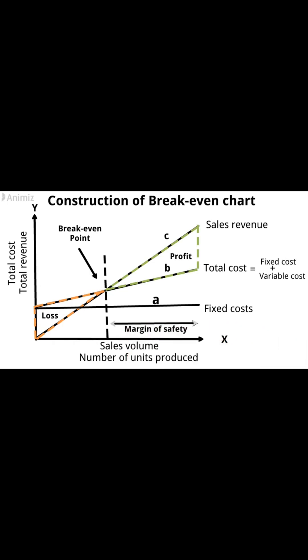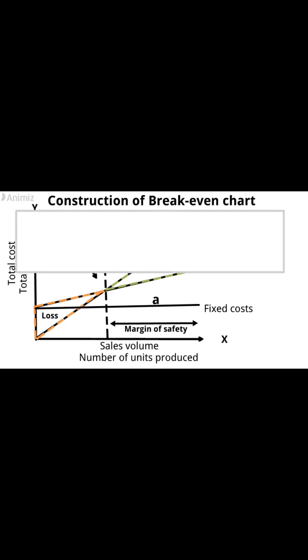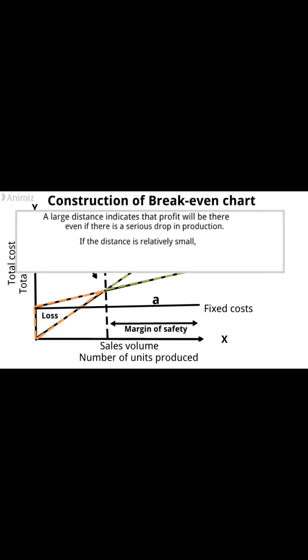The margin of safety is presented on the breakeven chart by the distance between the breakeven point and the production output. A large distance indicates that profit will be maintained even if there is a serious drop in production. If the distance is relatively small, it indicates profit will be reduced considerably with a small drop in productive capacity or sales.